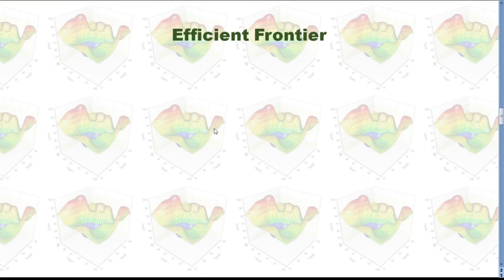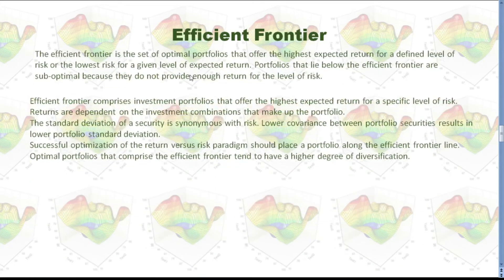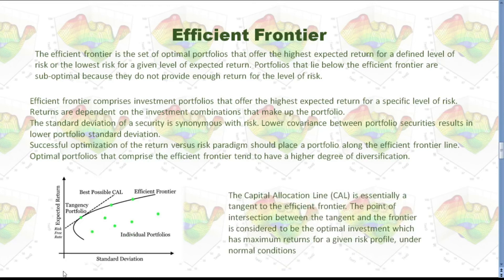When we try to find the best portfolio for our investment, we consider the efficient frontier. The efficient frontier is the set of optimal portfolios that offer the highest expected return for a defined level of risk, or the lowest risk for a given level of expected return. We consider expected return and risk simultaneously. Looking at this graph: the horizontal axis shows standard deviation of the portfolio, and the vertical axis shows expected return. This curve represents the efficient frontier.